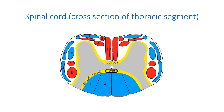The dorsal funiculus carries ascending tracts: fasciculus cuneatus or Burdach's (13) and fasciculus gracilis or Goll's (14). Thus, the spinal cord performs conductive and reflex functions. It transmits signals from the afferent nerve fibers of the sensory neurons to the upper sensory centers in the CNS, and from the upper motor centers to the body. It also contains reflex arcs and coordinates many somatic and visceral reflexes.